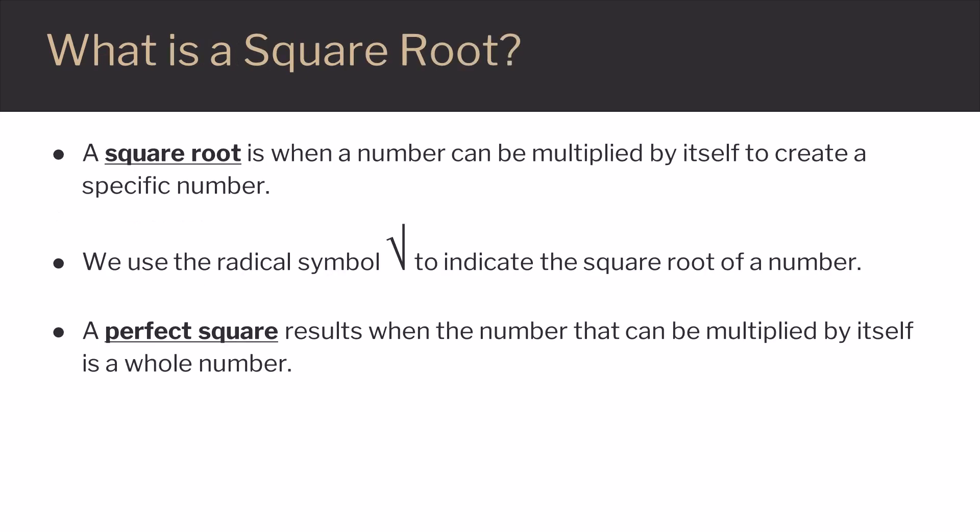A square root is when a number can be multiplied by itself to create a specific number. We use the radical symbol, which looks like a checkmark, to indicate the square root of a number. A perfect square results when the number that can be multiplied by itself is a whole number.